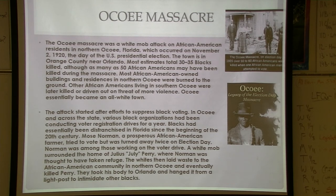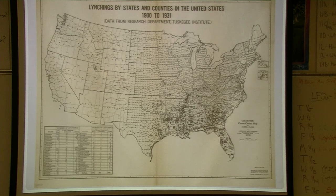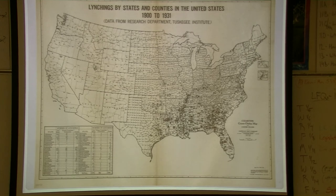Another massacre you need to know is the Ocoee massacre, which occurred in 1920, starting when a Black man tried to vote in Ocoee outside of Orlando. The Black areas of the town were burned down, and as many as 50 African Americans were killed — the exact number is unknown. Black families were driven out of Ocoee. Lynching — hanging without trial — was common, and Florida was actually one of the worst states for lynching, mostly concentrated in the South, though some incidents occurred along the Ohio River.